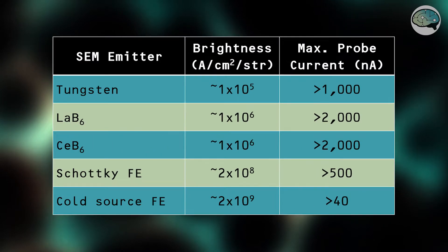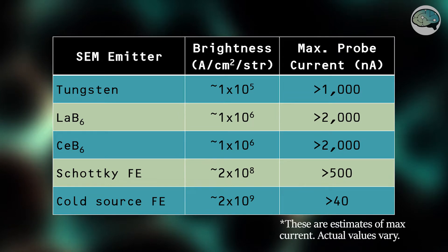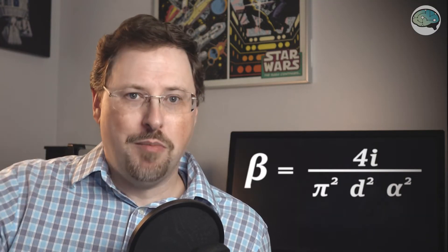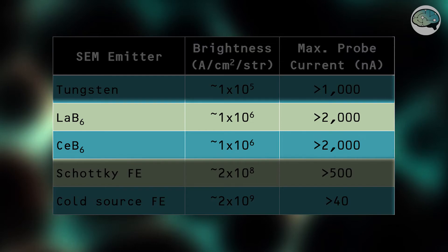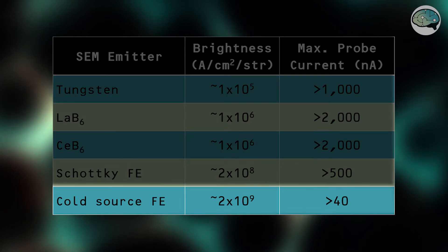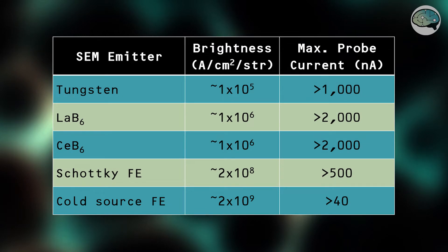Different types of filaments put out different levels of emission current, and the amount of probe current you get will depend on the specific instrument you're using. For example, one model of Schottky SEM can only put out about 10 to 20 nanoamps of probe current, while a different Schottky model can put out 1,000 nanoamps. As a type, lanthanum hexaboride (LaB6) and cerium hexaboride (CeB6) put out the most current of any filaments, and cold source field emitters put out the least — with the caveat that there are cold source FEs that can beat some Schottky microscopes in raw current.